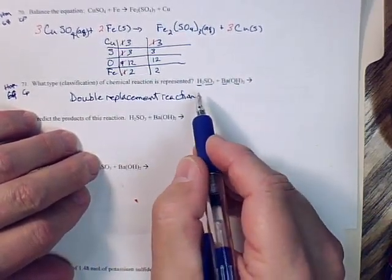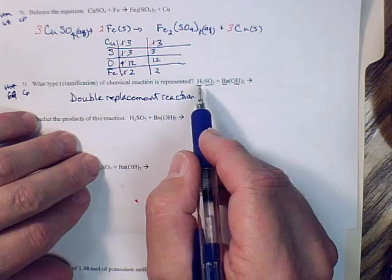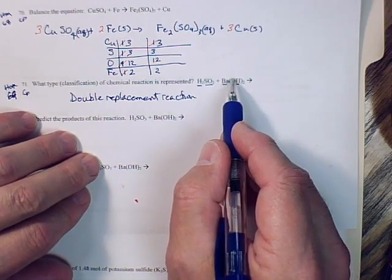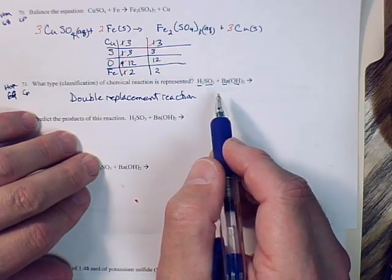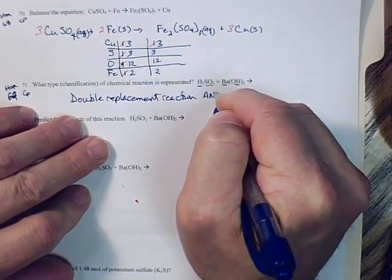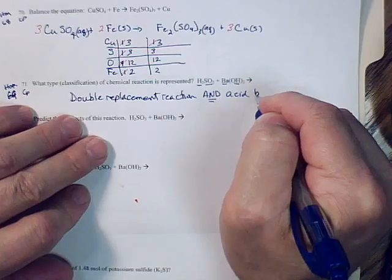But in addition to that, you should know that because this species has a hydrogen on the front, that it's an acid. And this species, because it has a hydroxide on the back, that it's a base. So in addition to this, you must also classify this as an acid-base reaction.